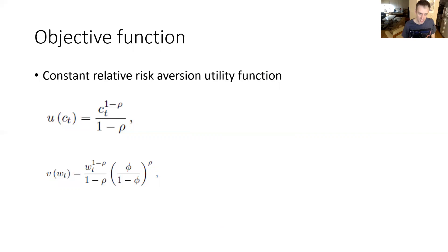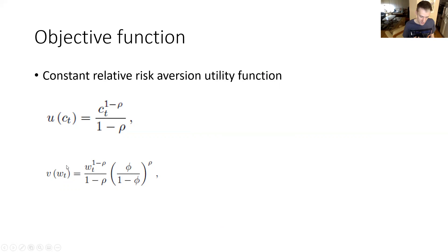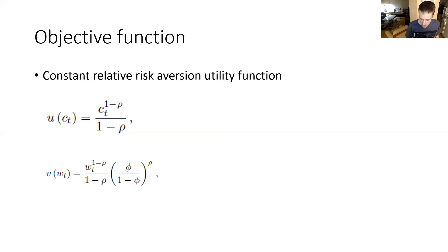Their objective function is the constant relative risk aversion (CRRA) utility function. The parameter rho determines degree of risk aversion: large rho corresponds to high risk aversion, while rho close to zero corresponds to near risk-neutrality. U(c) is the utility of consumption, and V(W) is the utility of bequest. The bequest parameter phi determines the extent of the bequest motive: phi equal to zero means no bequest motive, while phi close to one corresponds to a high bequest motive.